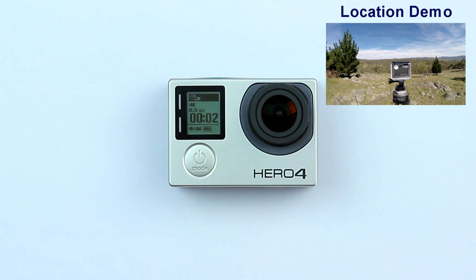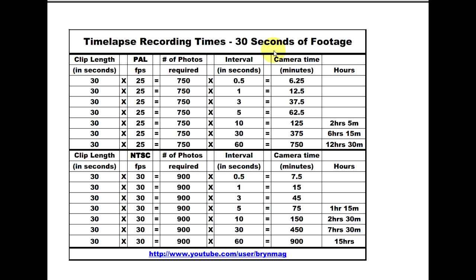If you were to use the 60 second interval option, you would need to record for at least 30 minutes just to have one second of footage, so you need to plan accordingly. I've included a link to a time-lapse calculator spreadsheet in the description below, and if you want you can download it directly from Dropbox.